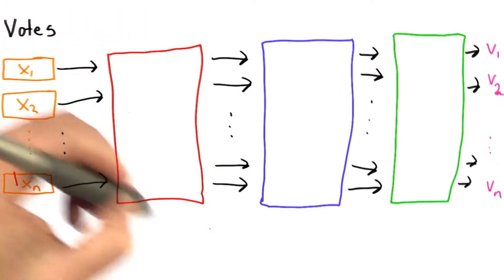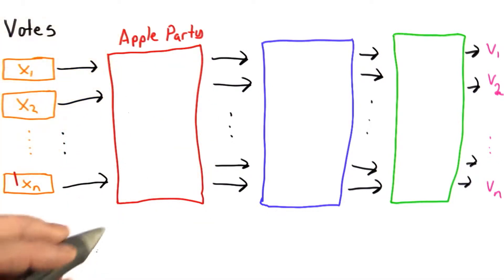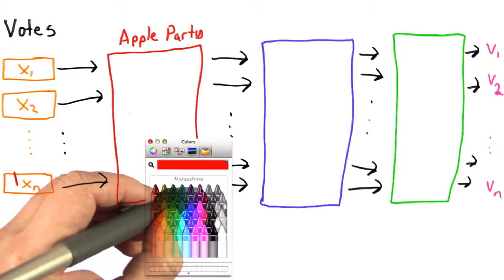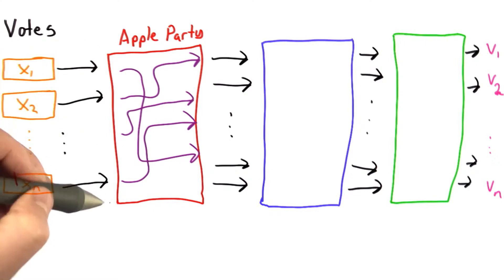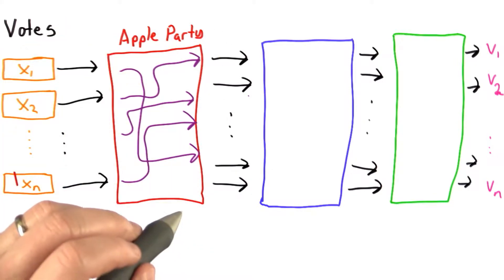Let's say this is controlled by the apple party. And what the permutation does is randomly scramble the order of the votes. So now, the position of the votes that came in doesn't match the position of the votes that came out.